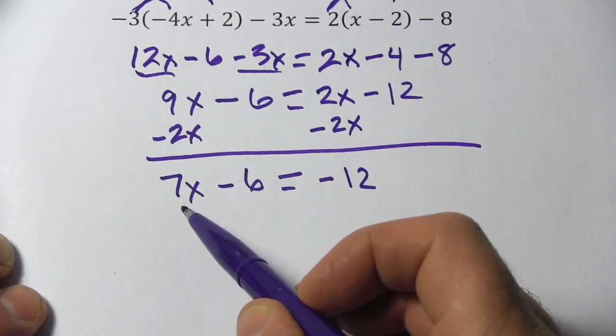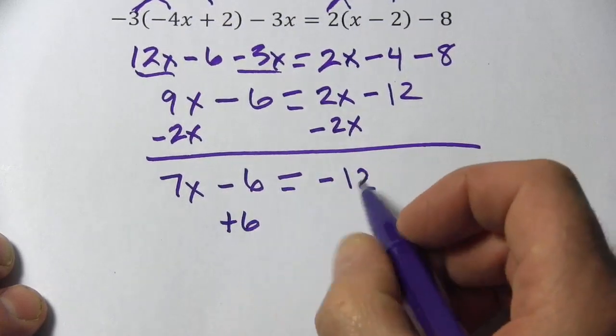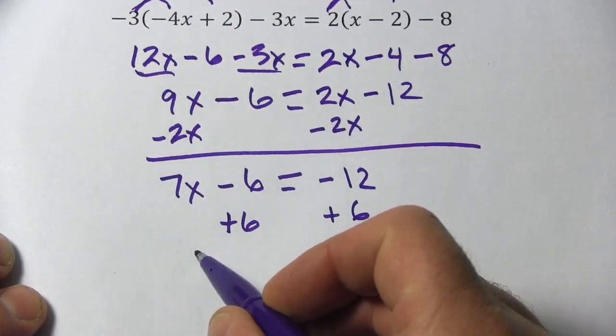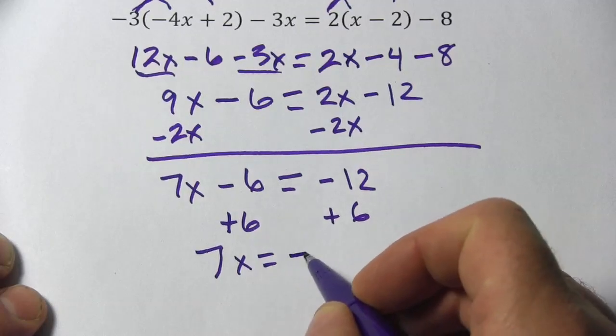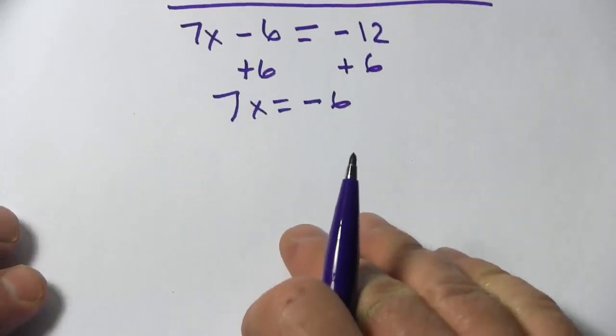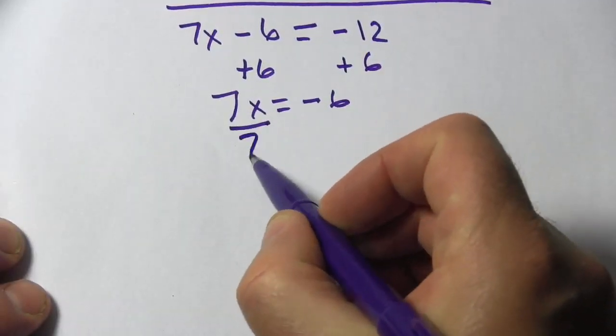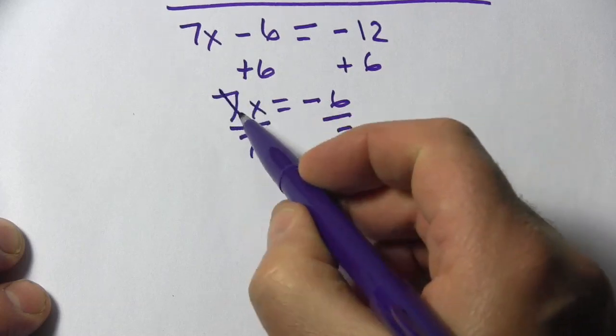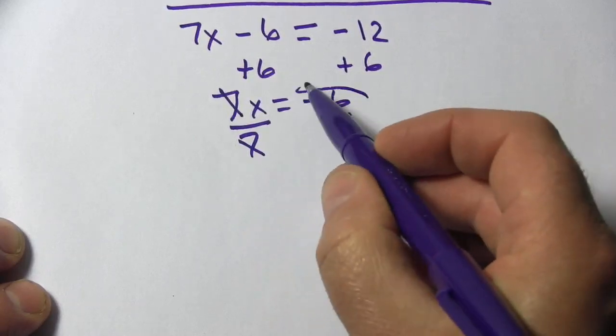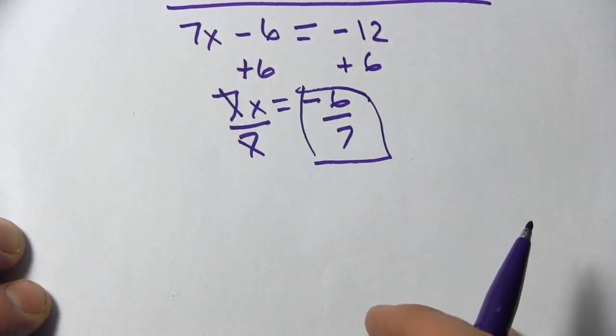Now I need to get the x term alone. So I'll get rid of this negative 6 by adding 6. And I get 7x equals negative 6. And then finally, divide by 7. We get x alone. x equals negative 6 sevenths.